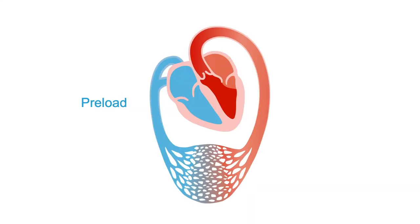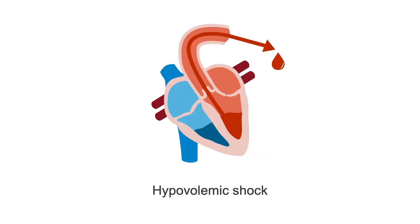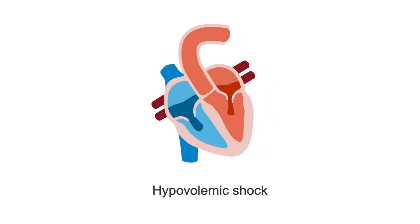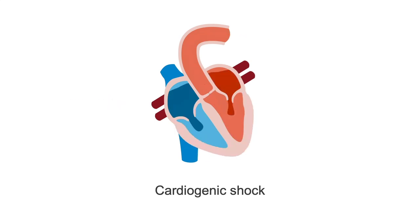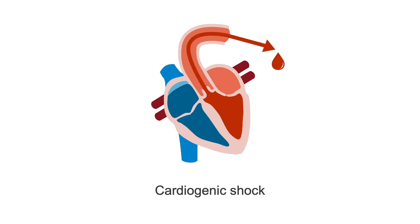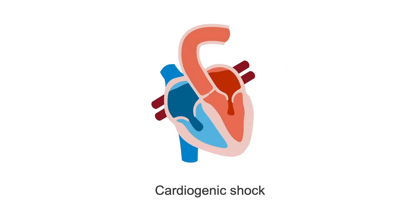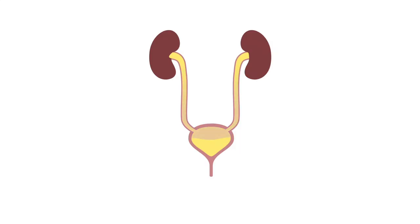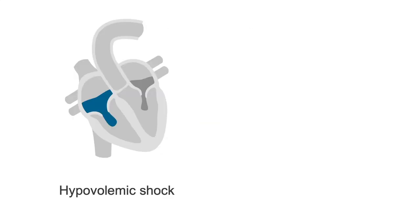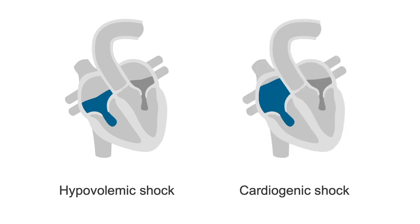Preload reflects the volume of blood inside the circulation. So in hypovolemic shock, the primary insult is low stroke volume caused by low preload. In cardiogenic shock, the primary insult is also low stroke volume, but caused by a weakened heart. The preload is actually increased compared to normal due to activation of the kidneys to retain sodium and therefore water. It's sufficient to remember low preload in hypovolemic shock and high preload in cardiogenic shock.